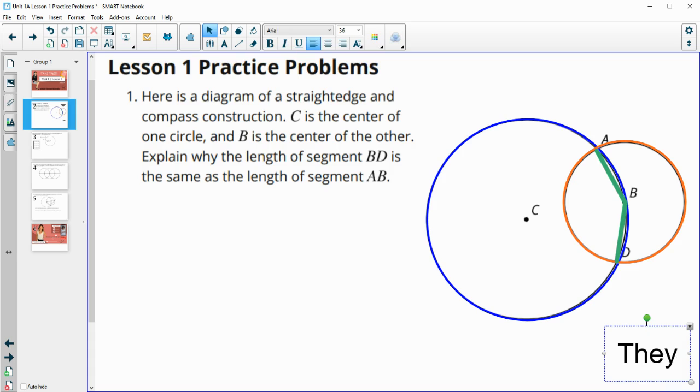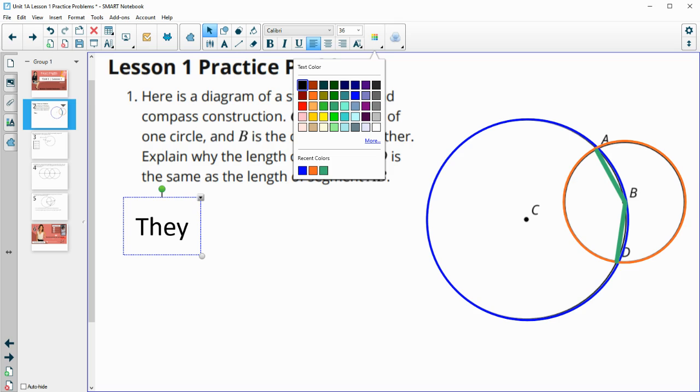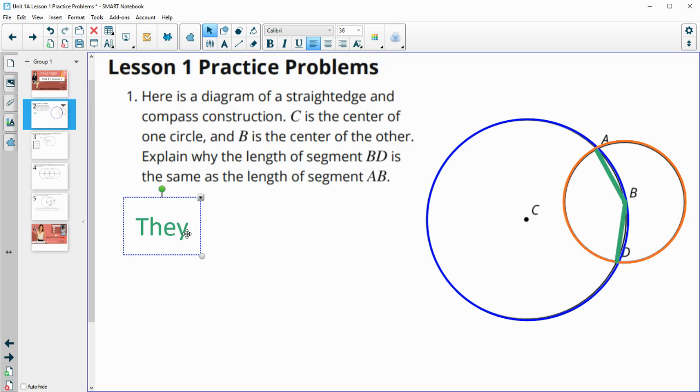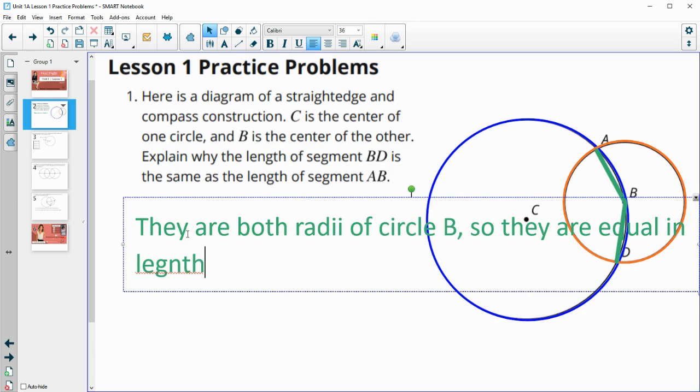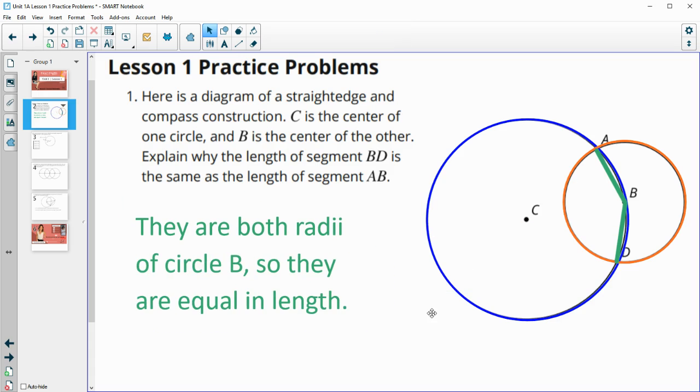Let me write this out. They are both radii, which is the plural of radius of circle B, so they are equal in length. We know that any radius in the same circle, since the circle is the set of all points equidistant from a center, so that means those two segments would be identical in length.